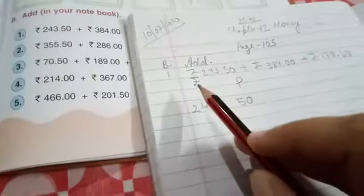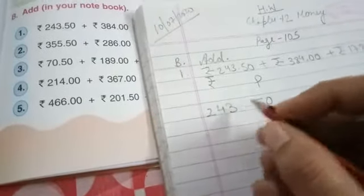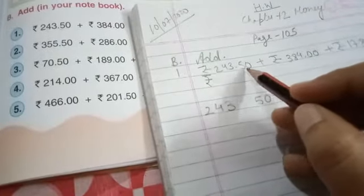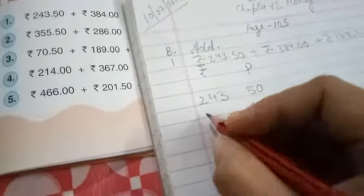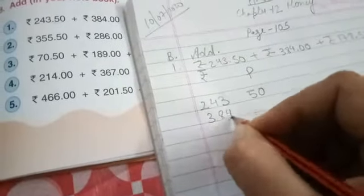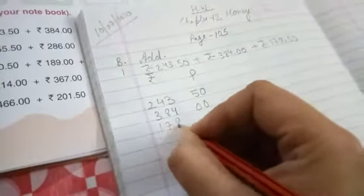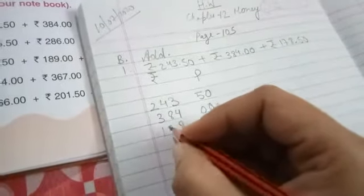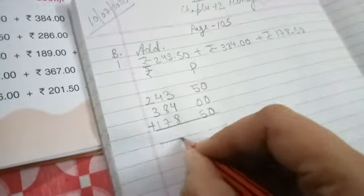So rupees 243.50 plus rupee 384 plus rupee 178.50. After that, write rupee one side and paise one side. Write the rupee in the rupees column, and after decimal means this is paise, write this into paise column. Now 384, so 384, 0, 0 in paise column, so we will also write 0. Now 178, 5, 0. Now what you have to do? Add. So we will give the addition symbol and do the addition.